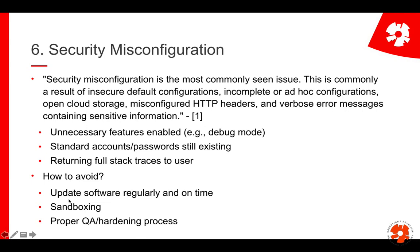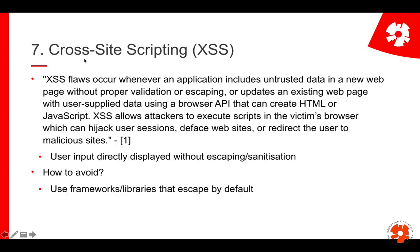Other issues include using outdated software that has known security problems no one has updated. Sandboxing is important — make sure your application runs in an environment where access is restricted, and if something breaks, people don't automatically get access to other parts of your system. On the process level, you should have a proper process of quality assurance, testing, and checking your environment.